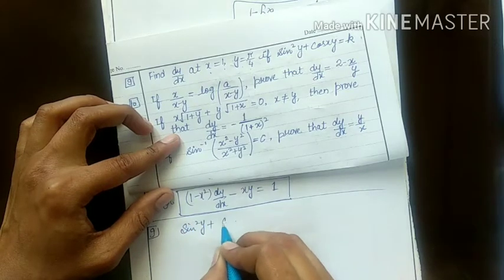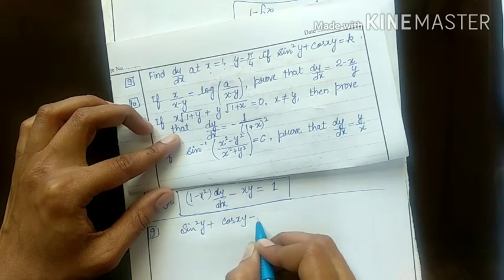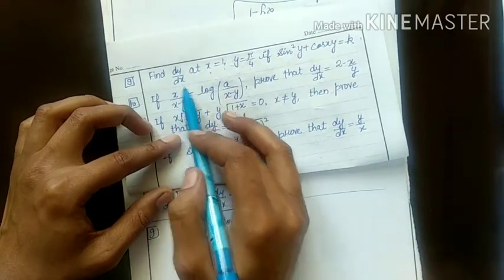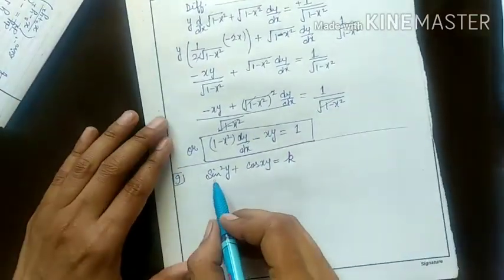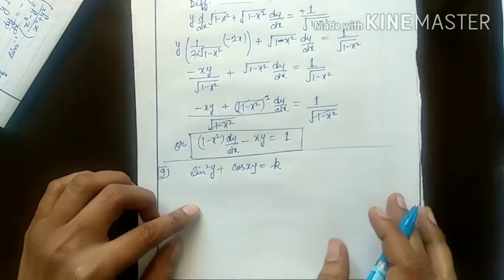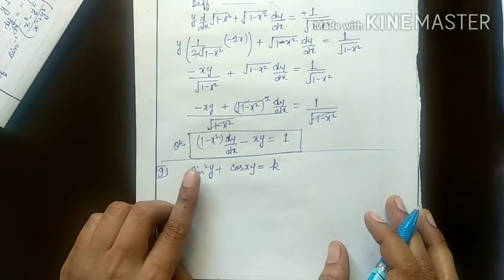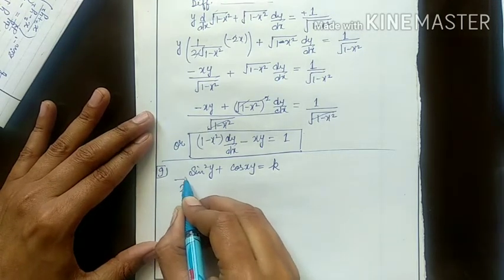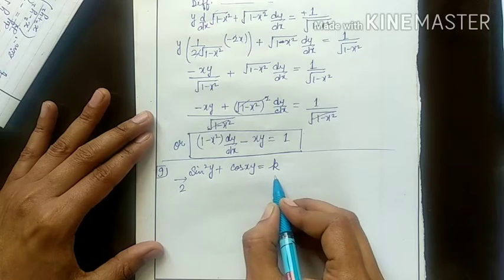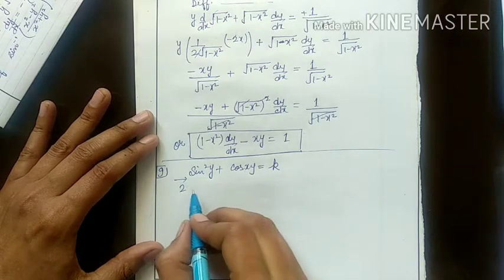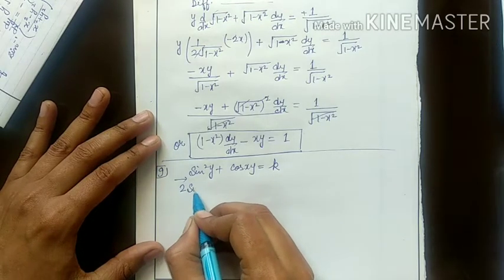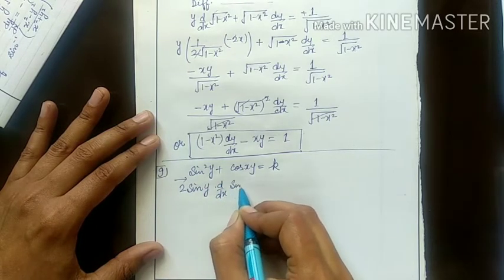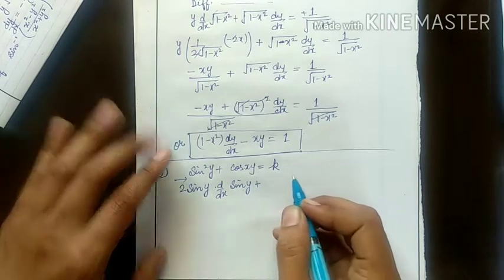Sine square y plus cos of xy equals k, where k is a constant. So you have to find dy by dx. First we have to differentiate. Sine of y to the whole square means f(x) raised to the power n — so apply the formula n times, differentiating the above equation with respect to x. Then 2 sine of y into derivative of sine y.